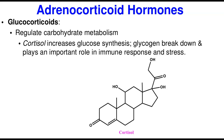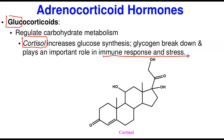The second group is the glucocorticoids. From the name 'gluco,' they regulate carbohydrate metabolism, particularly glucose. A good example is cortisol. Cortisol increases glucose synthesis, facilitates glycogen breakdown, and also facilitates gluconeogenesis — synthesizing glucose from non-glucose sources. It also plays an important role in immune response, stress, and inflammation.